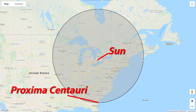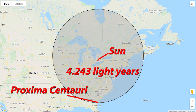So, instead of using astronomical units, when we start talking about distant stars, solar systems, and galaxies, we're going to use a new unit called light years. A light year is the distance that light can travel in one year. In the case of Proxima Centauri, it takes about 4.243 years for light to travel from our sun to that star. So, the distance we would say is 4.243 light years away.